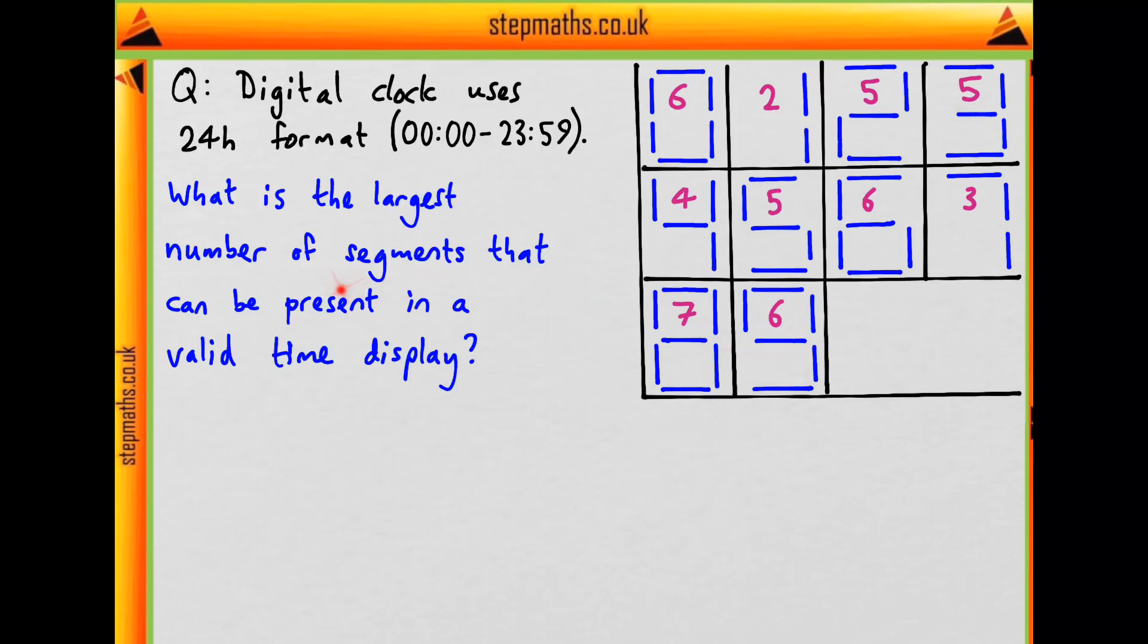So what's the largest number of segments that can be present in a valid time display? We know 88888 isn't a time, so we need to work out what the maximum number is that can go into each of these boxes. This first one can go from 0 to 2. The second one can go anywhere from 0 to 9 because we can have the hours of 9 o'clock. This one goes up to 5, and this final one can be anything from 0 to 9.